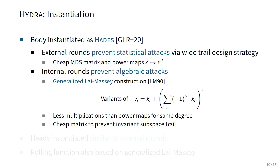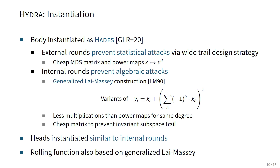Since the generalized LeMessi construction is known to be susceptible to invariant subspace trails, we have a linear layer in the internal rounds to prevent these subspace trails, and in the paper we show how to construct a very cheap matrix that fulfills this goal. The head of the Hydra is also instantiated with something very similar to the internal rounds of the body — a version of the generalized LeMessi and the same matrix to prevent subspace trails.